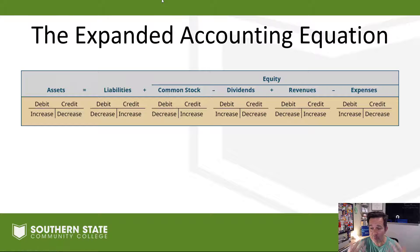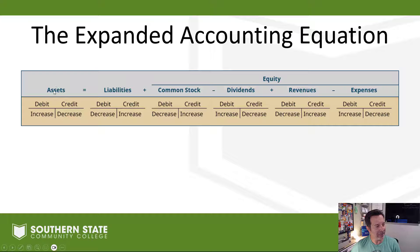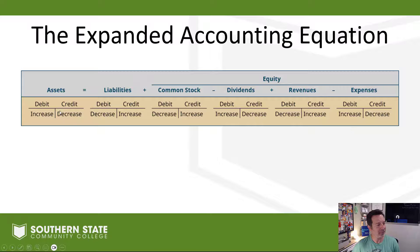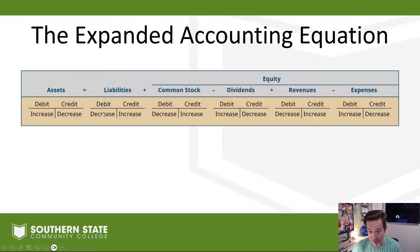Now let's look at this from a T-account standpoint. We've learned about T-accounts and talked about debit and credit — debit is the left side of an account, credit is the right side. You can see the different categories here: assets, liabilities, and equity. Asset accounts always go up on the debit side, the left side, and they decrease on the credit side. On the other side of the equation it's flip-flopped: liabilities, common stock, and revenues go up on the credit side and decrease on the debit side.